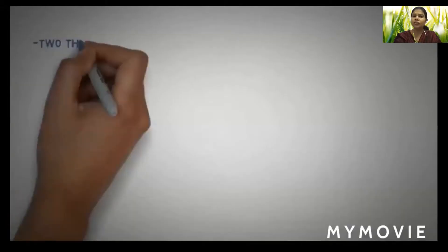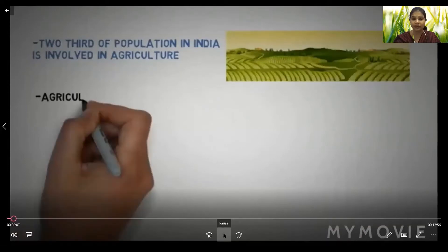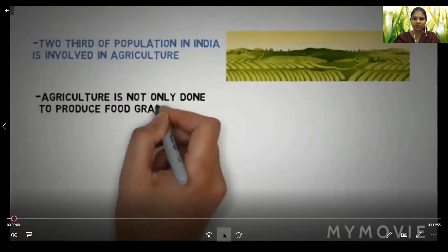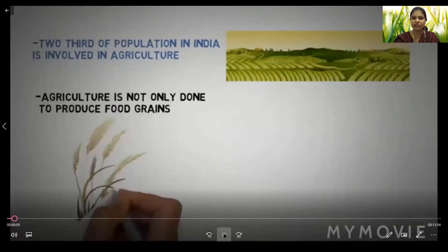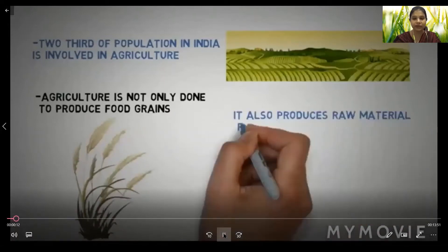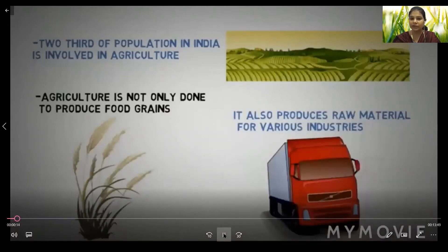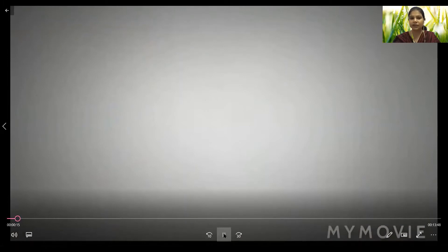Two-thirds of the population in India is involved in agriculture, which is why this chapter is very important. Agriculture is not only done to produce food grains; it also produces raw material for various industries.